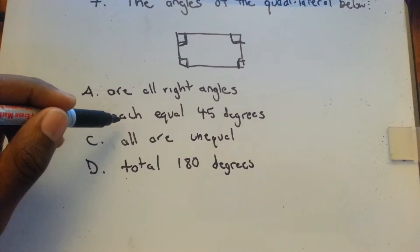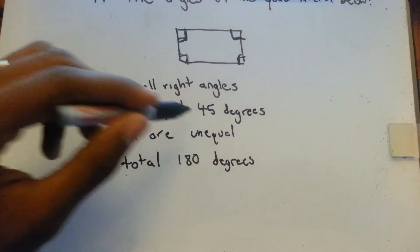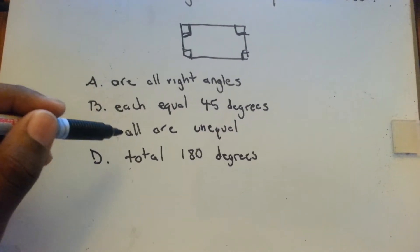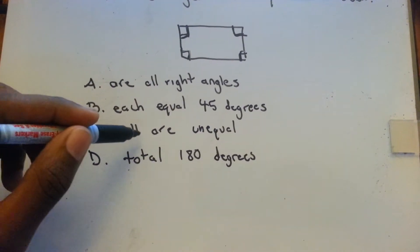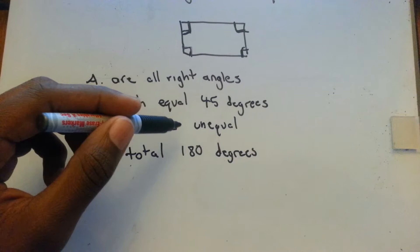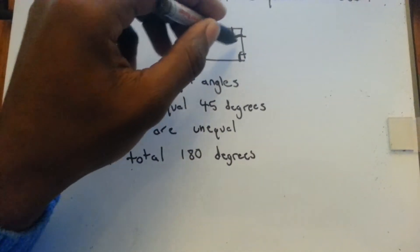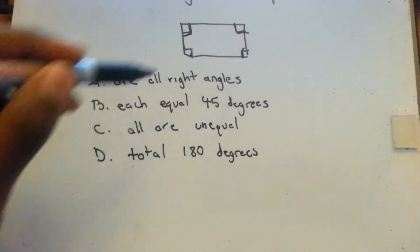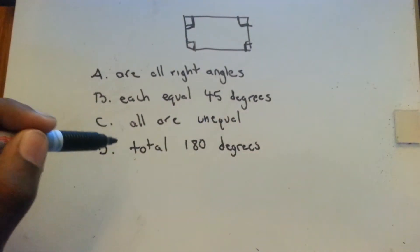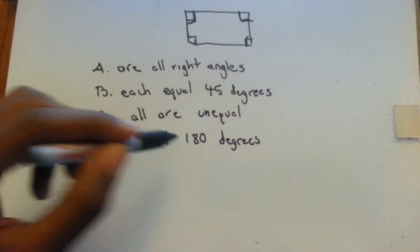These other ones it's not 45 degrees. Obviously they are not all unequal because they are all the same. They each have that little box there to let you know that they're 90 degrees and the total is not 180 degrees.